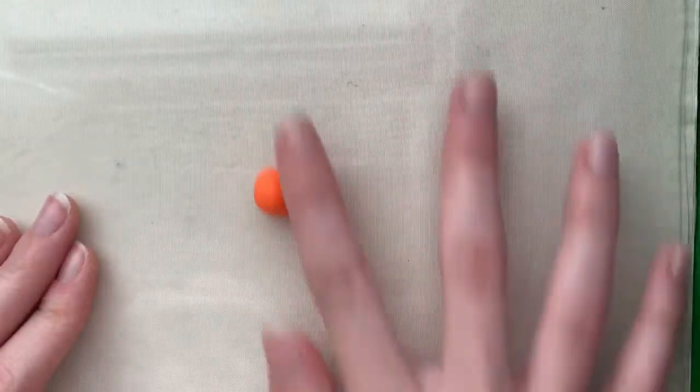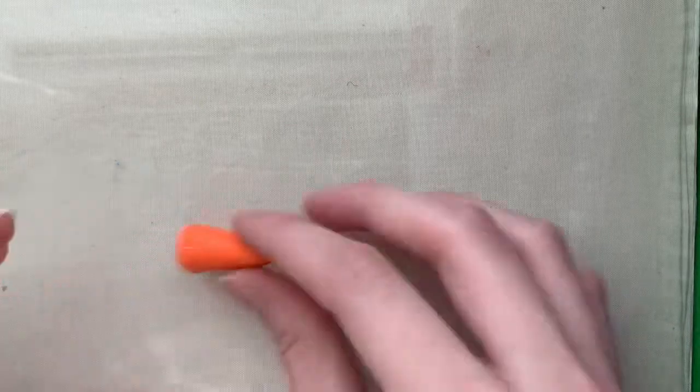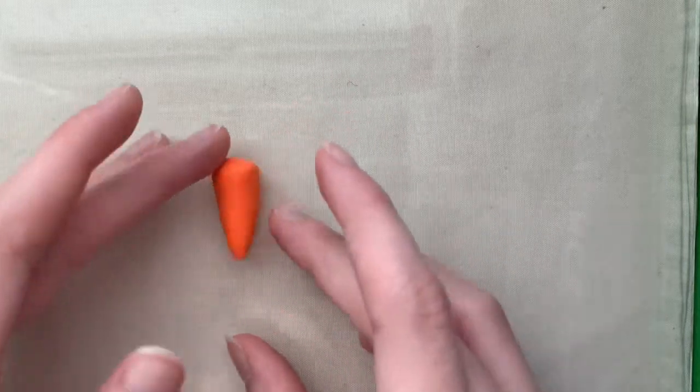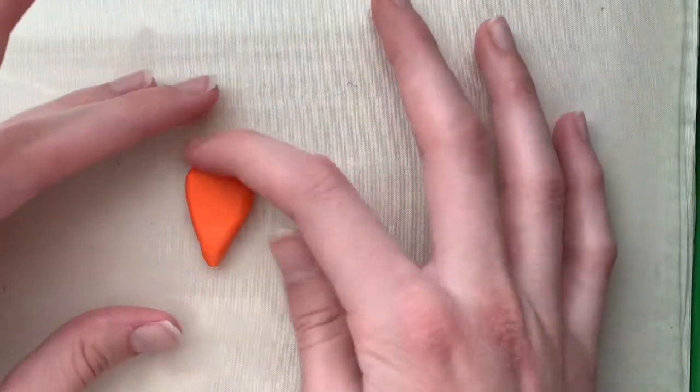Now you're going to get your orange and roll it into a ball, then roll one end of it to make it kind of pointy. Once you have the shape you like, you can press it down to make it flat, and then the top you're going to make it very flat and not round.